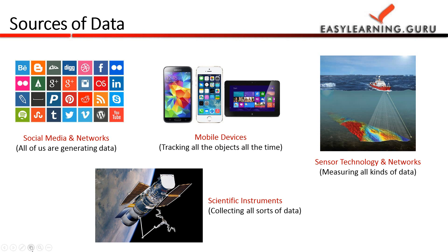Now we'll talk about sources of data. These come mainly from social media networks, mobile devices, sensor and technology networks, and scientific instruments. Data from social media and networks includes likes, comments, photos, check-ins, uploads, pages, and groups. Mobile devices have come a long way from just calling and messaging devices to super devices today which can track each and every movement of the user, and this tracking generates a lot of data.